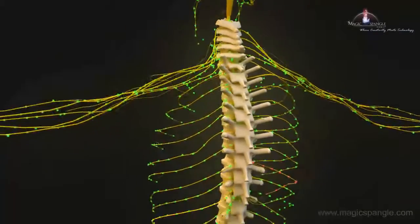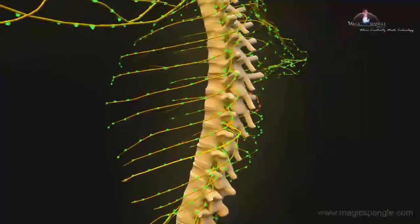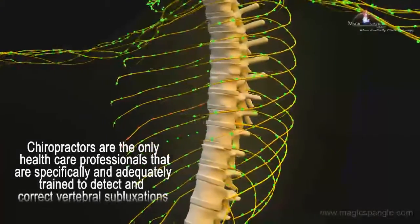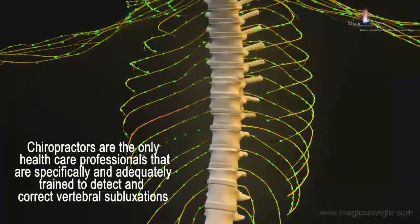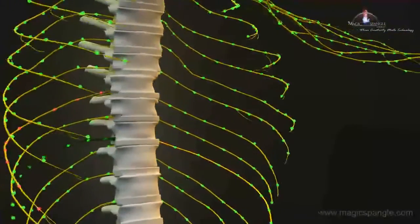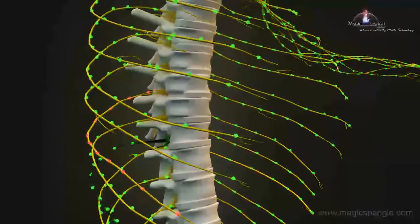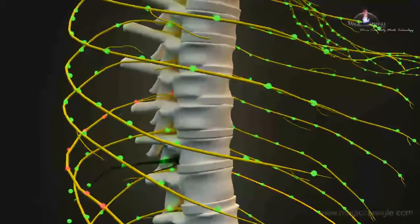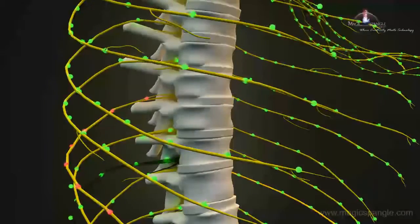Fortunately, chiropractic can help. In fact, chiropractors are the only healthcare professionals that are specifically and adequately trained to detect and correct vertebral subluxations. And through a series of precise chiropractic adjustments, your chiropractor will restore your spine's proper alignment, remove nerve interference, and return your body to its optimal health.